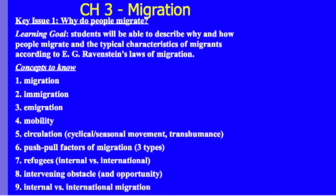This is Chapter 3, Key Issue 1. The learning goal is that students would be able to describe why and how people migrate and the typical characteristics of migrants according to E.G. Ravenstein's Laws of Migration. There are a lot of concepts to know, so here's the list.